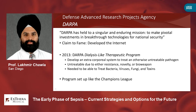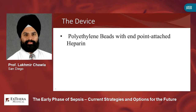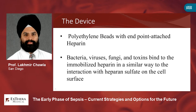The device that won this dialysis-like therapeutic program to remove bacteria, viruses, fungi, and toxins is the Seraph 100, made by Xterra Medical. That was in 2013. The device is now CE-marked and available in Europe, and it's also approved for COVID in the U.S. under an emergency use authorization. Essentially, it uses polyethylene beads with endpoint-attached heparin. It turns out that immobilized heparin binds bacteria, viruses, fungi, and toxins in a very similar way to heparan sulfate in mammalian tissue.